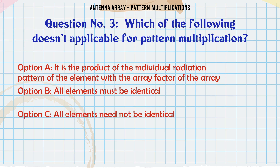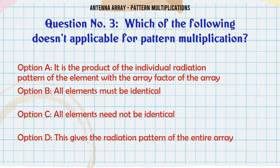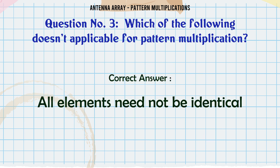Which of the following does not apply for pattern multiplication? A. It is the product of the individual radiation pattern of the element with the array factor of the array. B. All elements must be identical. C. All elements need not be identical. D. This gives the radiation pattern of the entire array. The correct answer is: All elements need not be identical.